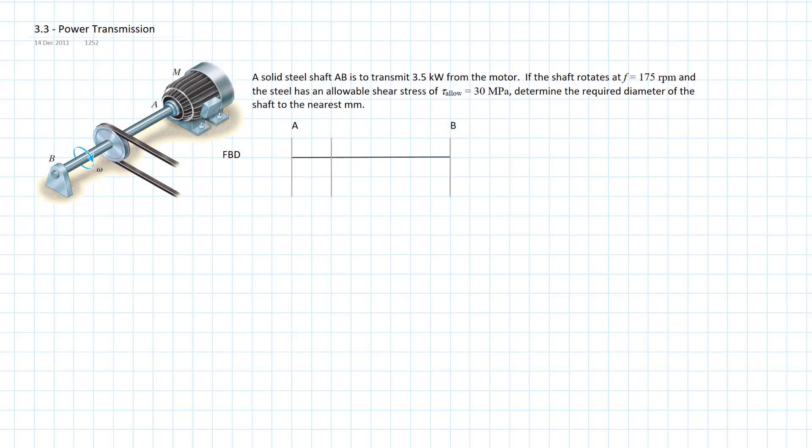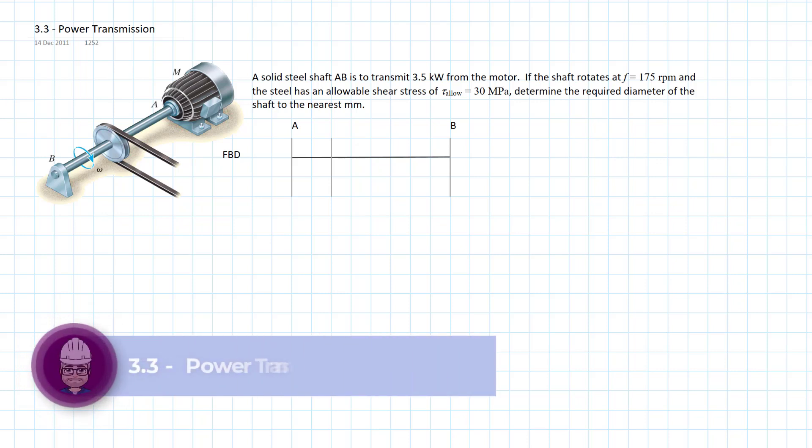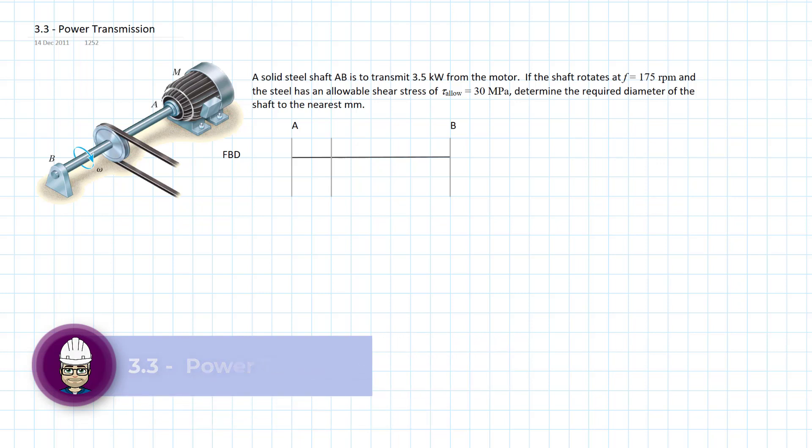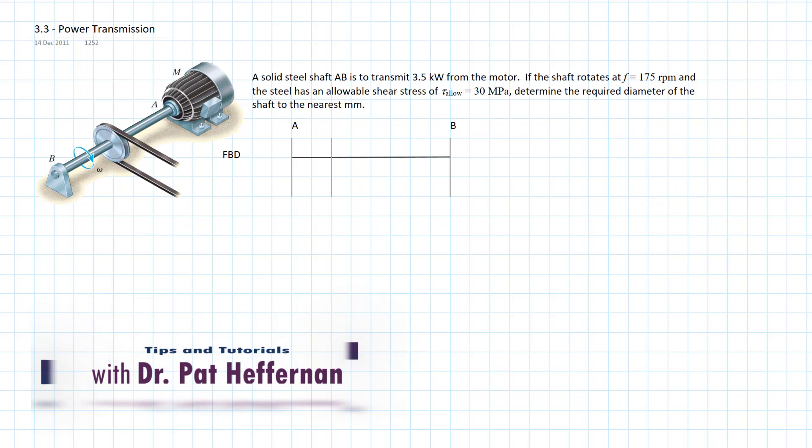We've been working on torsion problems on shafts, and here we have just a slight twist to the problems we've been looking at. We're adding one extra step in that we have to do a power conversion because there's a relationship between the power, either pulled off at a pulley or provided by a motor, and the angular rate of rotation that the shaft is turning.